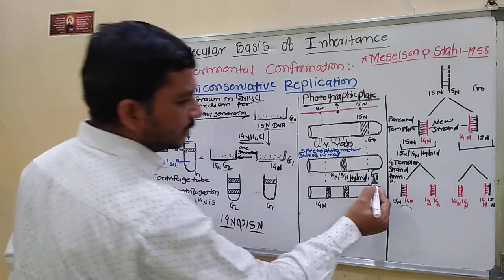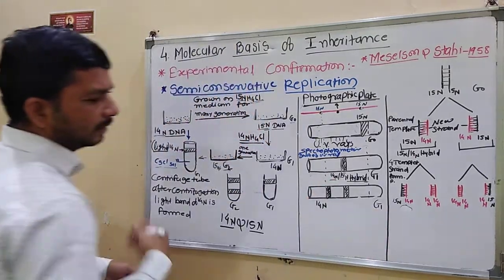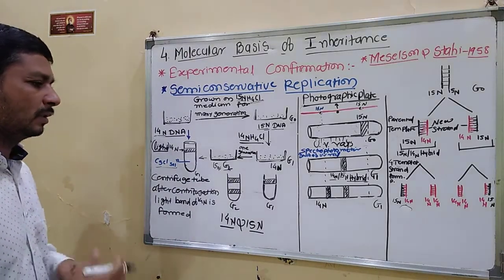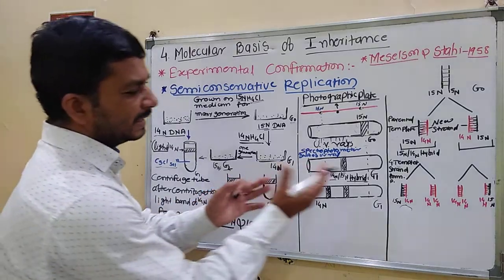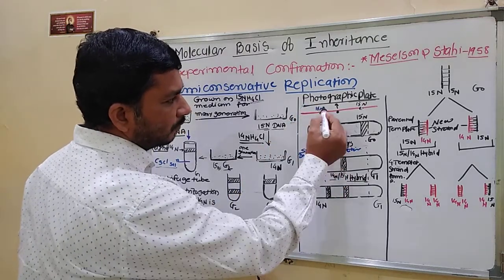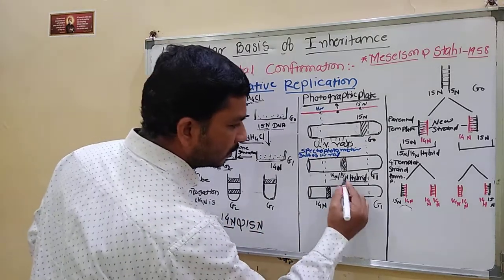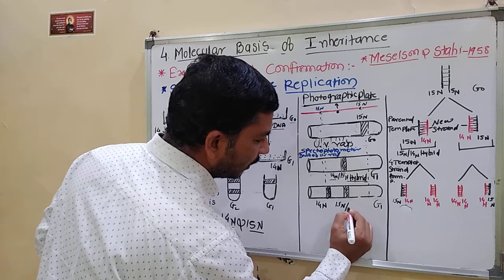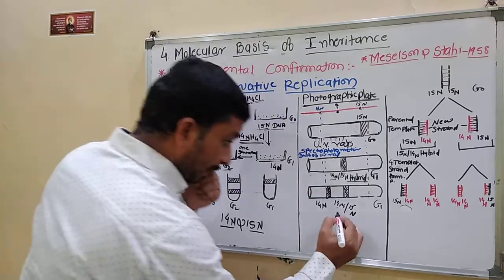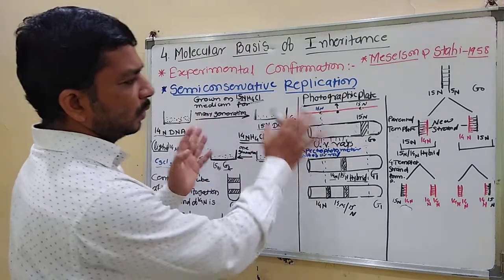This was about the G1 findings. He again collected a sample from the next generation, and after centrifugation, passing UV rays through the spectrophotometer, he found a 14N sample band, and also the 15N and 14N hybrid band was also present there. This is the overall conclusion from the experiment.